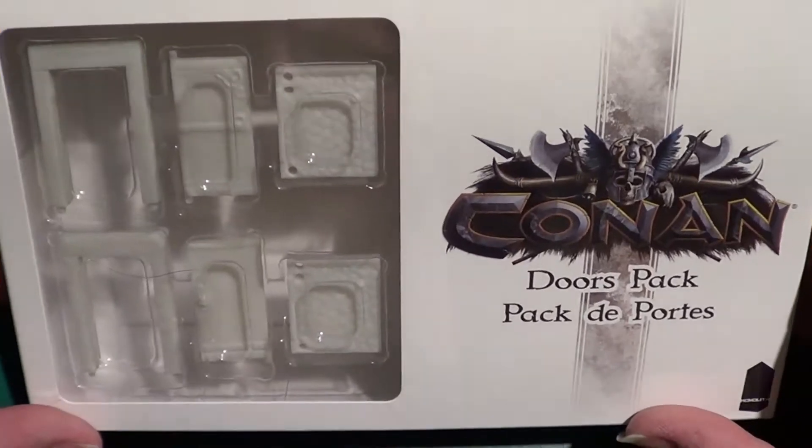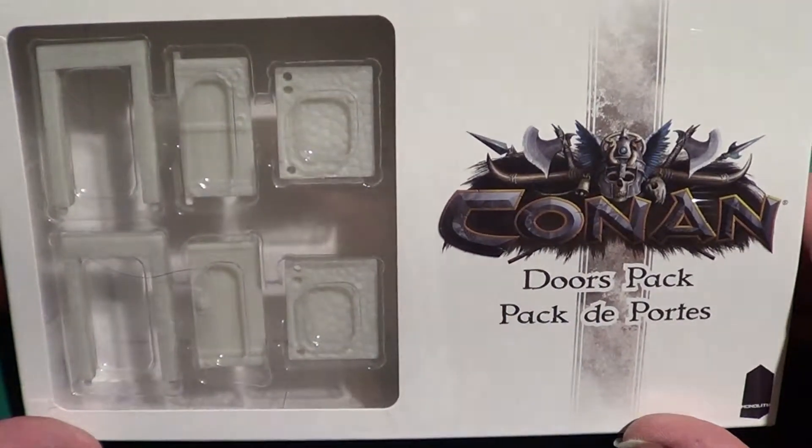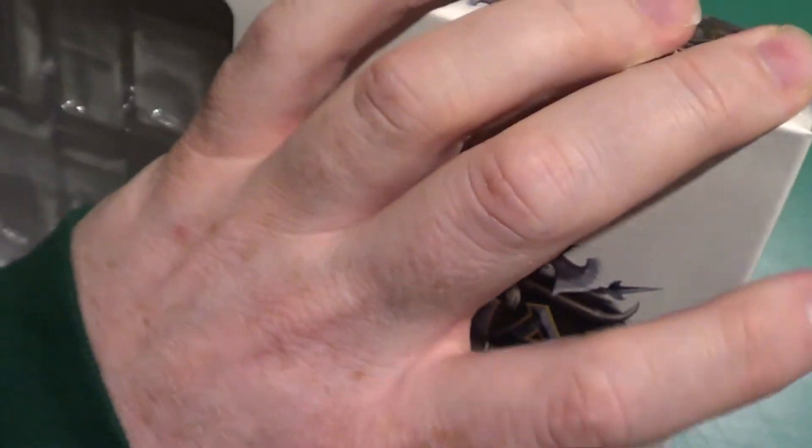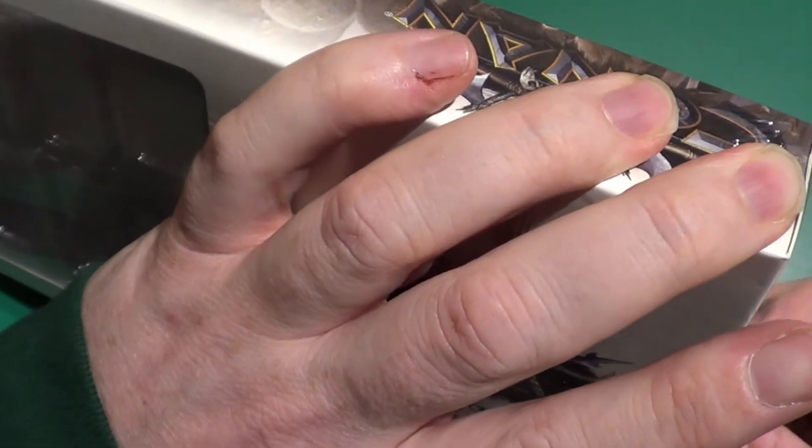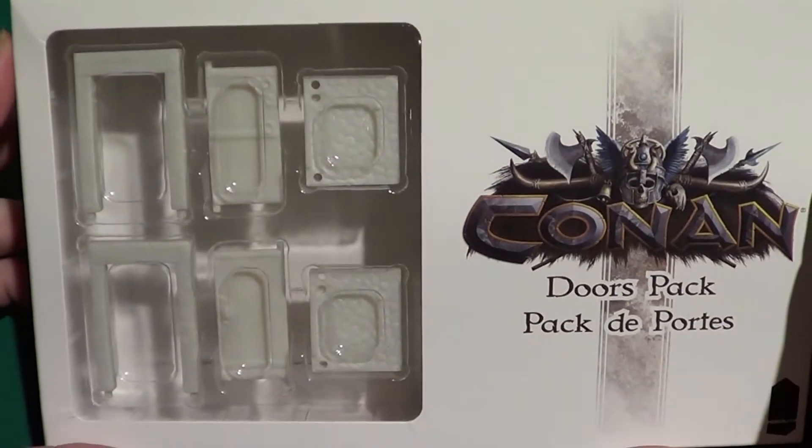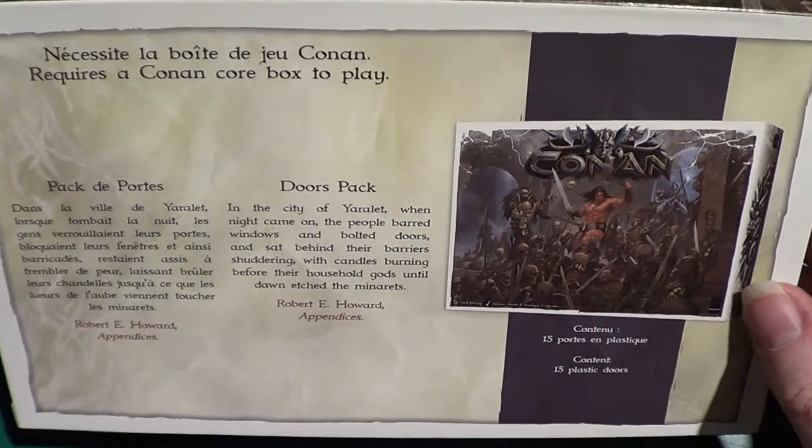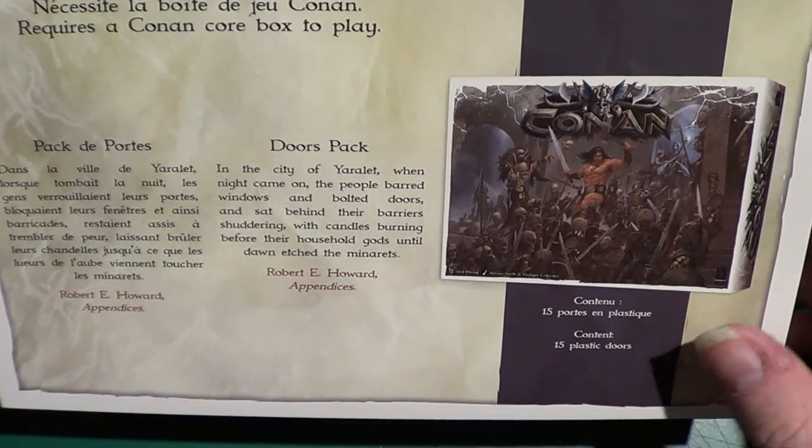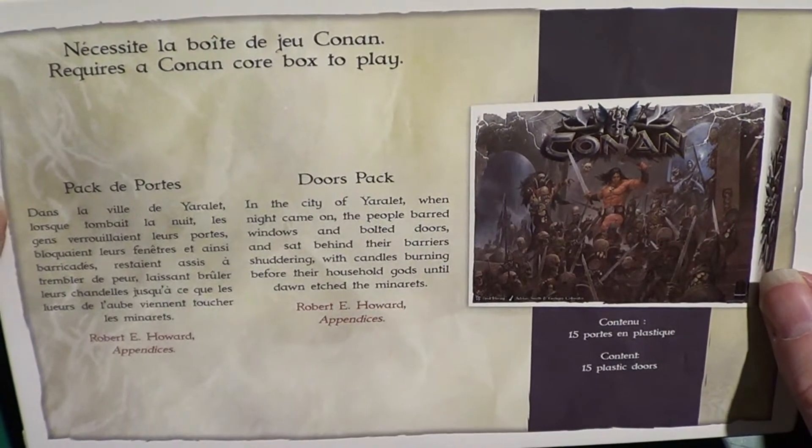Let's have a look at what these entail shall we. Okay, so here we are with the doors. Let's open up and see what's inside. Do what we usually do. Snap open at the opening of the box and then slide the cellophane off. That's how it looks. And this is what we have. 15 plastic doors. That's what we have in this.